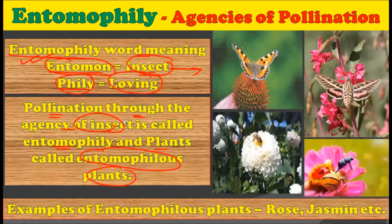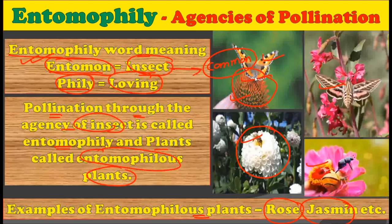If pollination occurs with the help of insects, that pollination is called entomophilous pollination, and the plants where this occurs are called entomophilous plants. Those flowers which show entomophily are called entomophilous flowers. Examples of entomophilous plants are rose and jasmine.